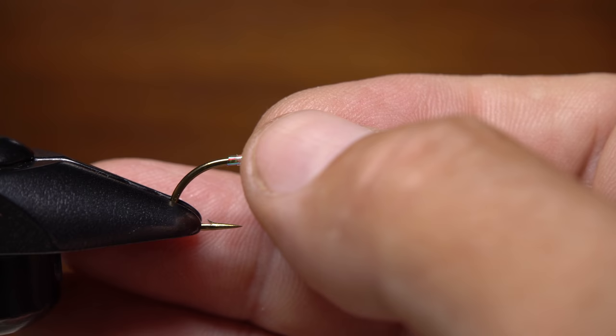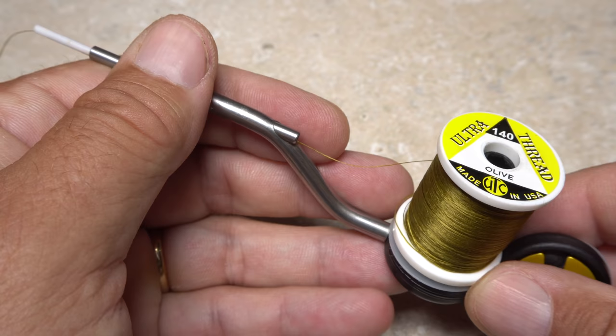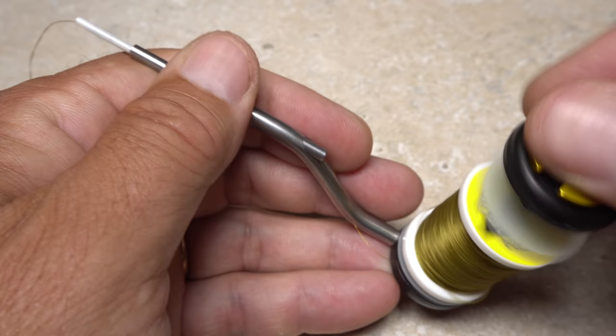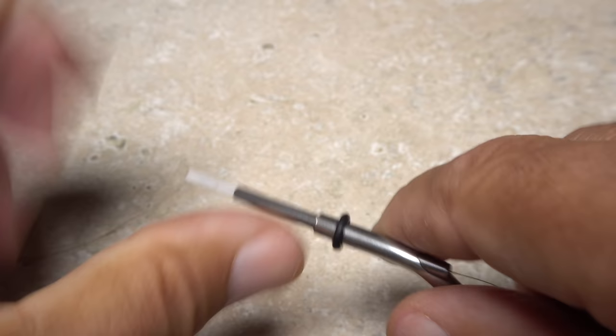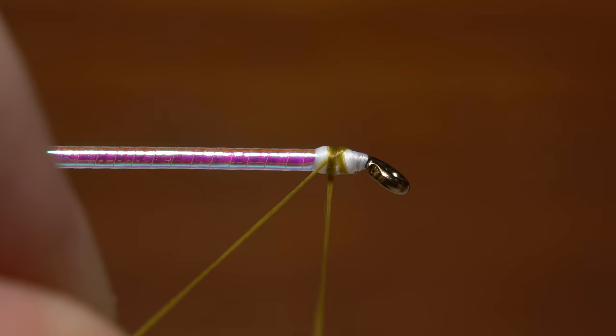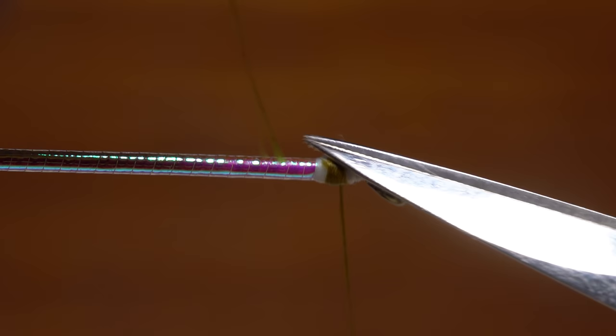Once dried, reinsert the hook into the jaws of your tying vise. For thread, olive UTC 140 denier is a good choice. In smaller sizes, say 8s and 10s, I'll drop down to 70 denier in order to keep bulk at the head of the fly to a minimum. Start the olive thread on the hook shank behind the hook eye and take a half dozen or so wraps rearward before snipping off the excess tag.